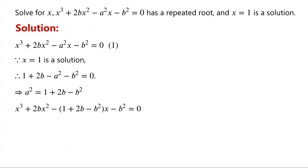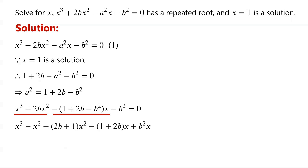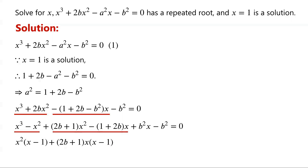We factor the left-hand side. X cubed plus 2BX squared can be written as X cubed minus X squared plus (2B plus 1) times X squared. The term negative (1 plus 2B minus B squared) times X becomes negative (1 plus 2B) times X plus B squared times X. Then minus B squared. So X cubed minus X squared share common factor X squared, giving X squared times (X minus 1). The terms (2B plus 1) times X squared and negative (1 plus 2B) times X share common factor (2B plus 1) times X, giving (2B plus 1) times X times (X minus 1). B squared times X and negative B squared share common factor B squared, giving B squared times (X minus 1).